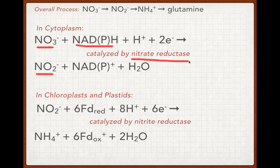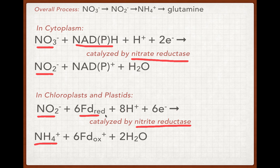The second step, because of the reactivity of the intermediates, occurs in the plastids, where nitrite is converted to ammonium by the enzyme nitrite reductase. This occurs with reducing power from ferredoxin or NADH, depending on the part of the plant in which it's occurring.